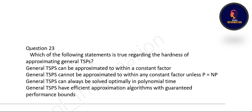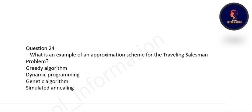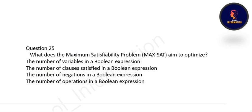Next question: which of the following statements is true regarding the hardness of approximating general TSP? The correct option is B: general TSP cannot be approximated to within any constant factor unless P equals NP. Next question: what is an example of an approximation scheme for the traveling salesman problem? The correct example is the greedy algorithm. Option A is correct.